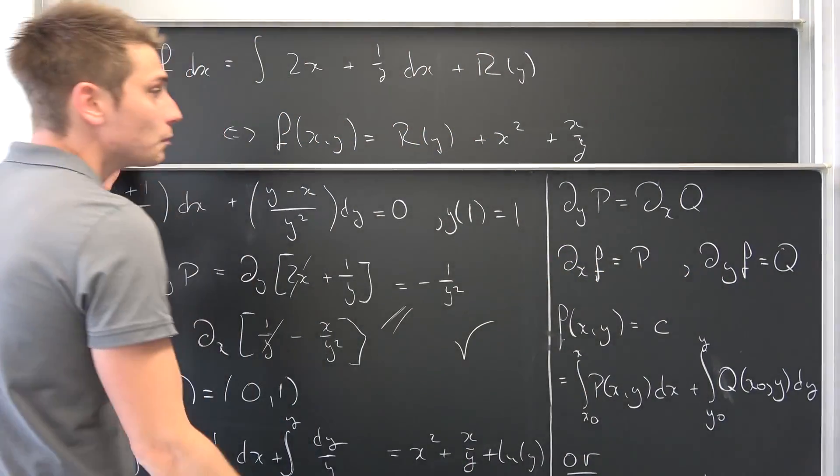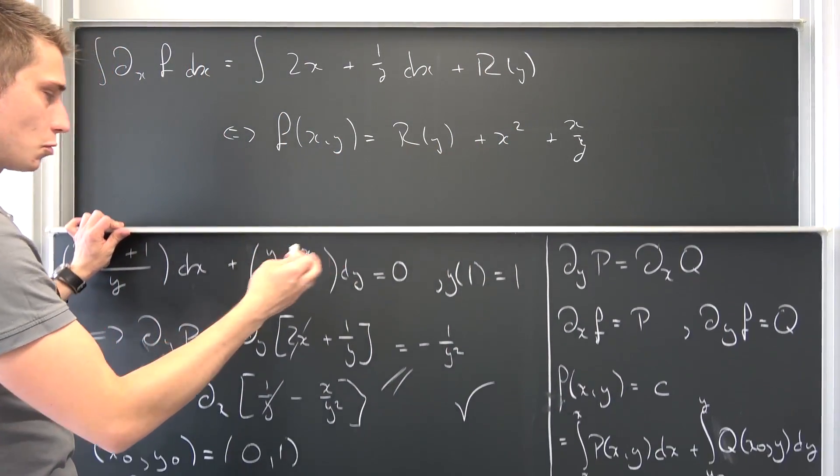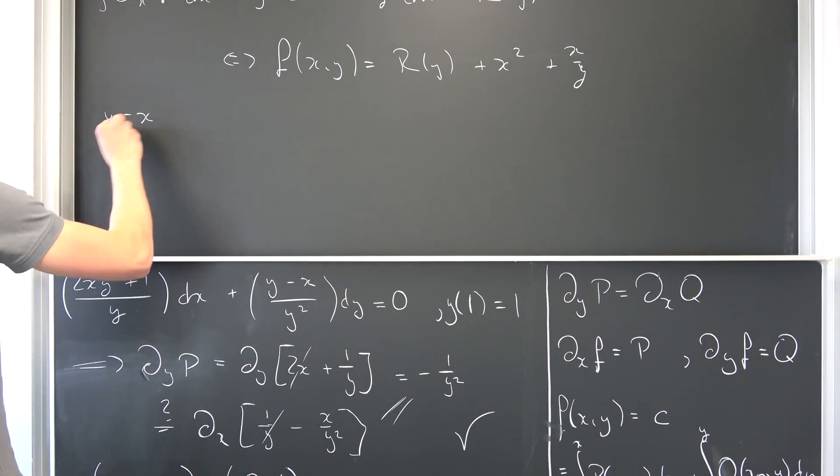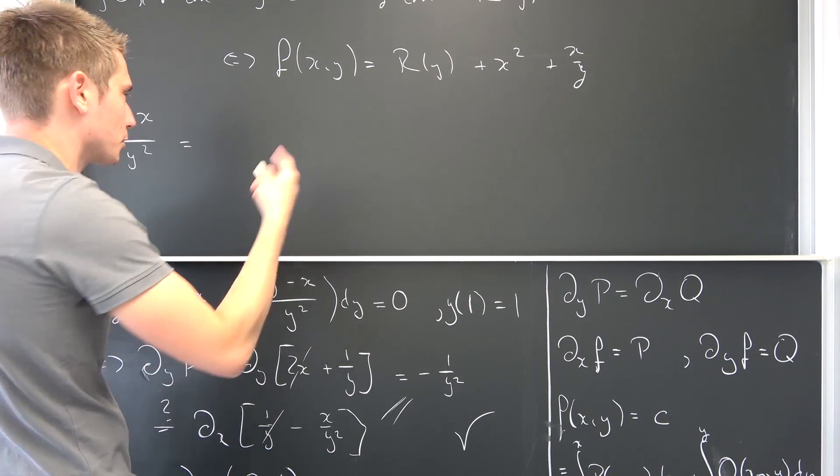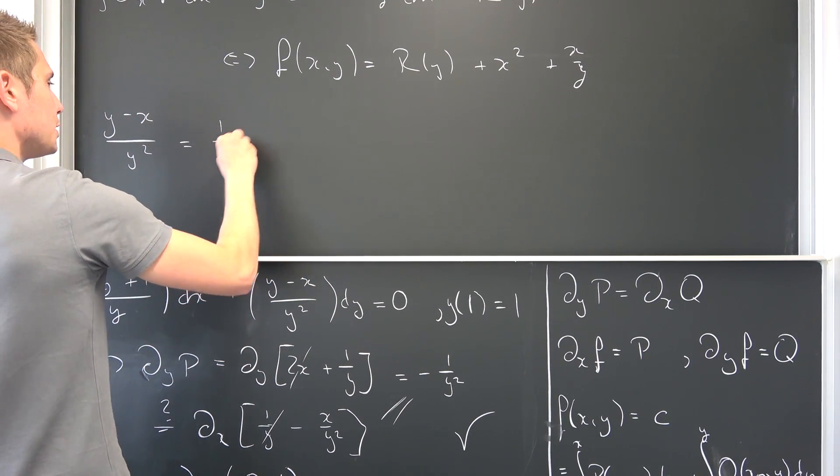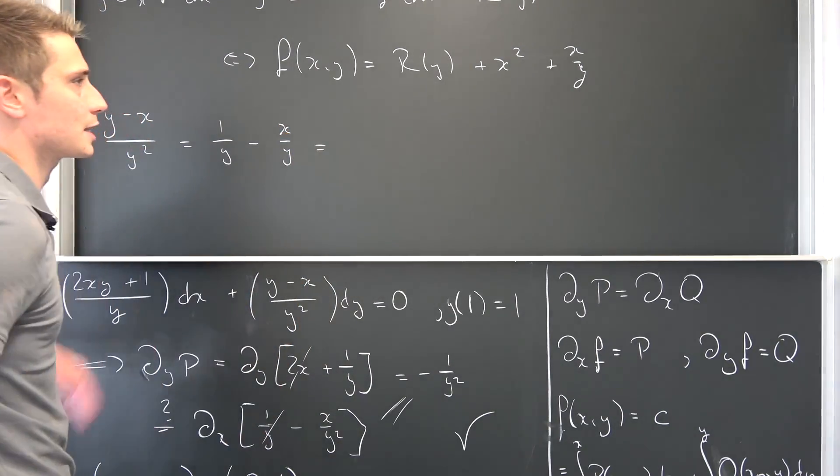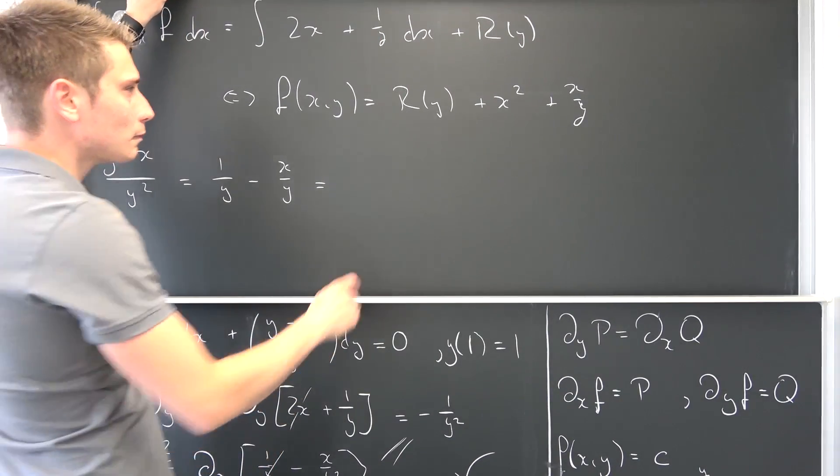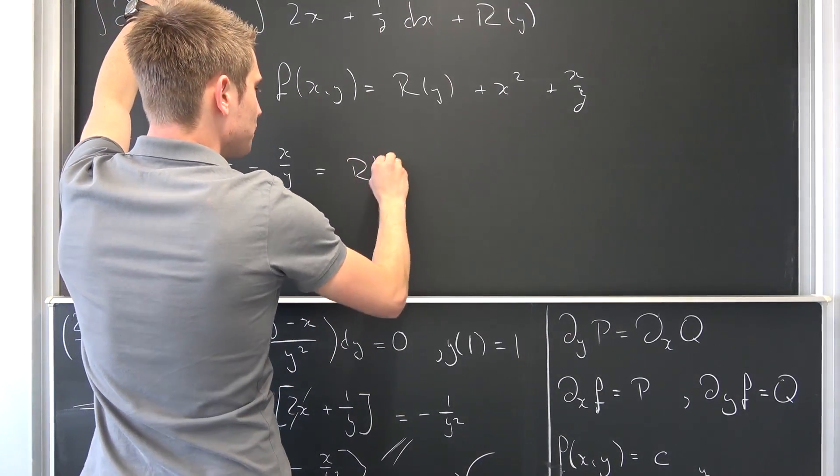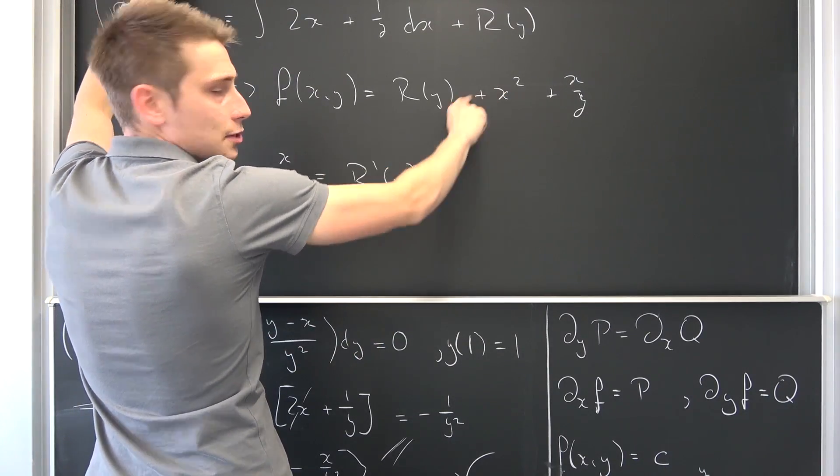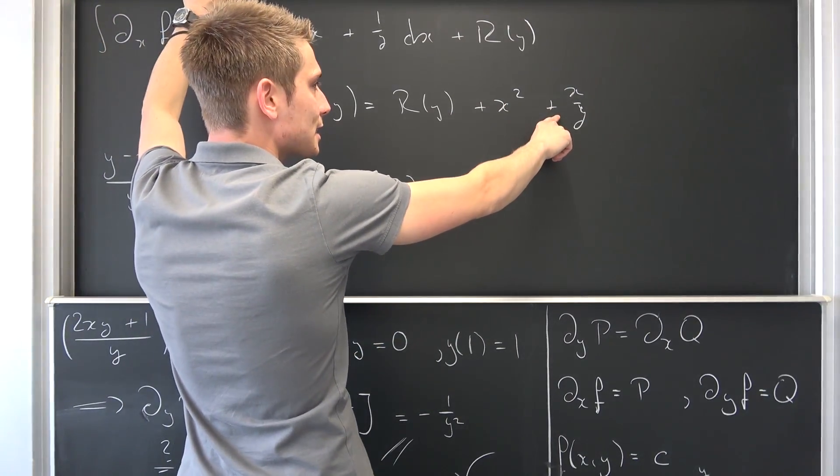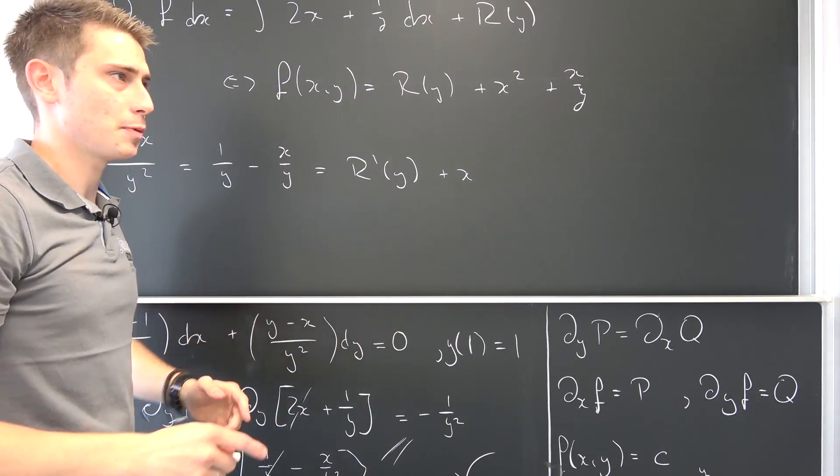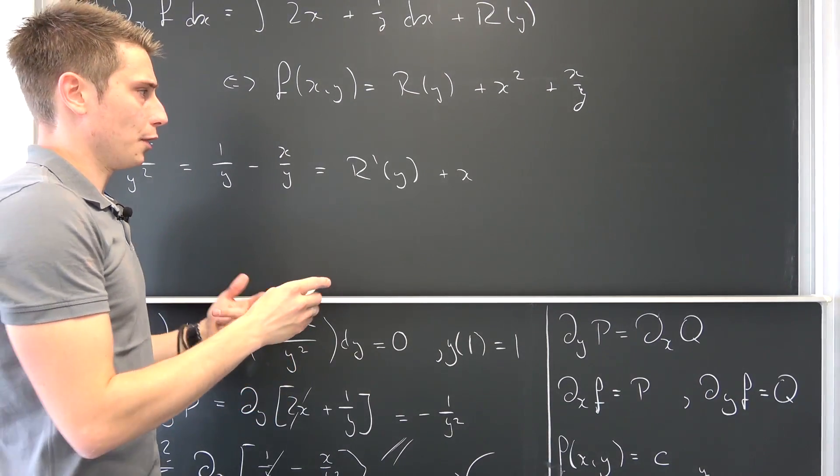Let's differentiate this thing with respect to y. Also we can plug in our Q. Our Q is nothing but y minus x over y², which is nothing but—I'm going to rewrite it—1/y minus x/y. And this is just the partial differential of this thing right here with respect to y, meaning this is going to give us r'(y). This is going to vanish in the process, plus x is just a constant we can bring to the front, plus x, and 1/y differentiated—we had this before—is negative 1 over y².